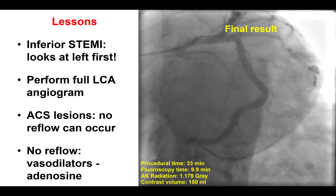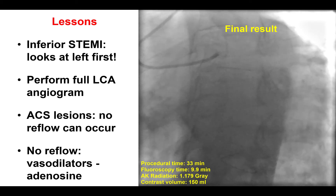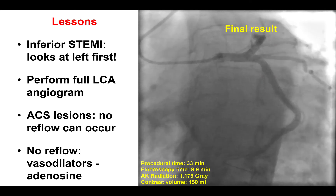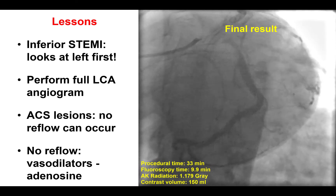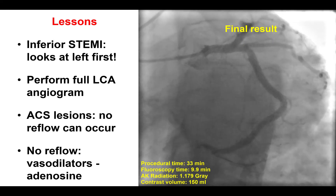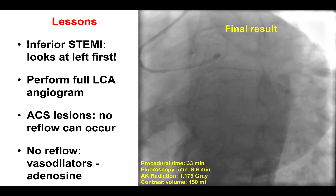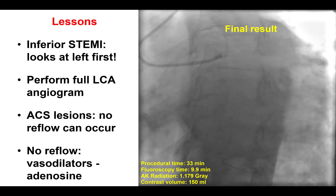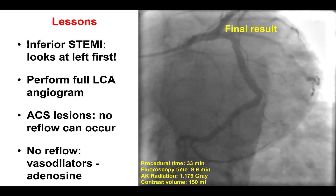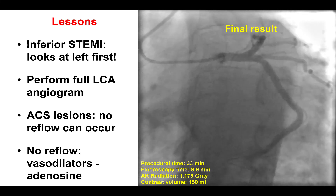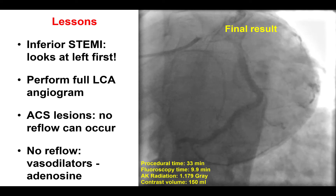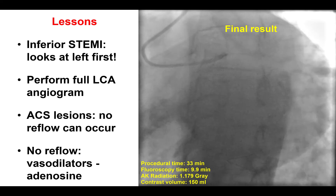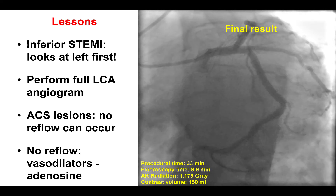Our case provides important lessons. The first is that in patients with inferior ST-segment elevation myocardial infarction, it is important before treating the presumed culprit right coronary artery to obtain an angiogram of the left coronary system. This is for several reasons: first, to know if there is significant disease in the LAD, circumflex, or left main that could become important if the patient becomes unstable during treatment of the culprit lesion; and second, because as we saw in this case, the culprit may actually be in a dominant circumflex or a large circumflex vessel.